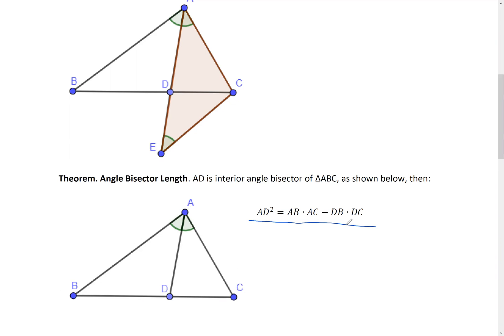AD squared equal AB times AC, the two legs of the triangle minus DB times DC. It takes us a step further from the angle bisector theorem. Now we can not just talk about, not only talk about the ratios, but also we can calculate the length of this angle bisector. That's interesting.